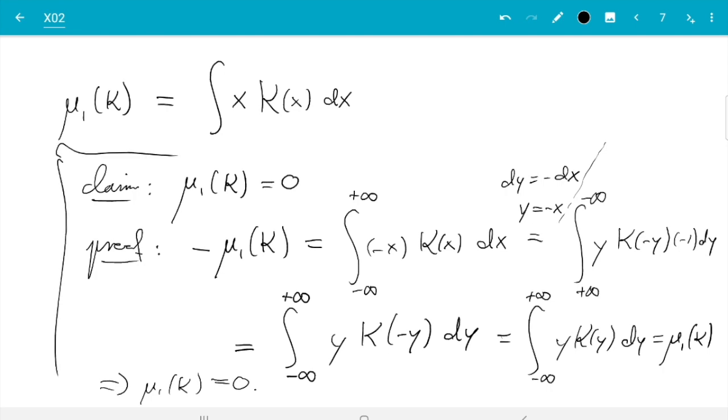Good. And now k is symmetric, so it's integral minus infinity plus infinity y k of y dy, which is mu1 of k. And then we have just shown minus mu1 equals mu1, so mu1 must be 0. So that's how I would prove this. But probably you know the rule: the integral of an antisymmetric function equals 0. k is symmetric, x is antisymmetric, so the product is antisymmetric. So the integral of an antisymmetric function is 0. We could have known that straight from the start if we remember that rule. Whatever, it's 0.